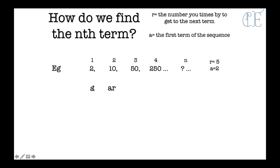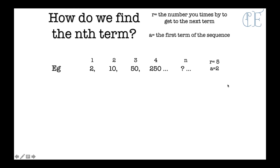The first term is a. The second term in the sequence must be a times r, because we have to multiply by r to get there. We have to multiply again to get the third term, so it will be r squared, then r to the power of 3, and so on. The power is always 1 less than the term number. So we can write the rule for a geometric series as ar to the power of n minus 1.